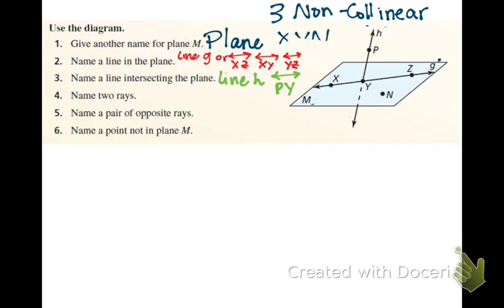Number four says name two rays. What does this symbol look like when you name a ray? A line with an arrow pointing to the right. So go ahead and pick two points to make a ray. YZ. Sure, why not? So YZ. And then pick another. YX. Sure. Starting at Y. Or sorry. Yeah, ending at X. So YX. Are these opposite rays?